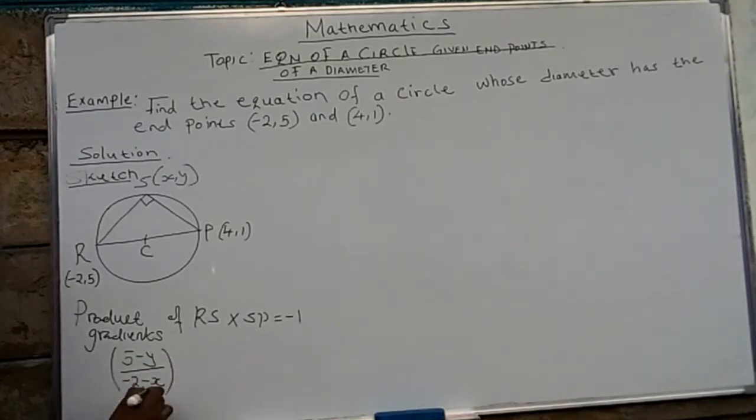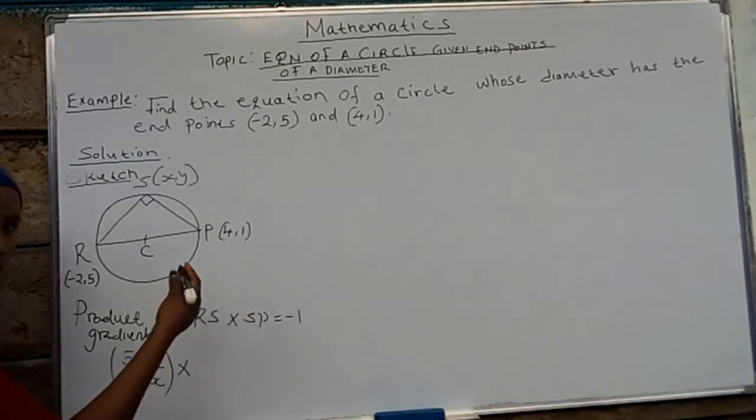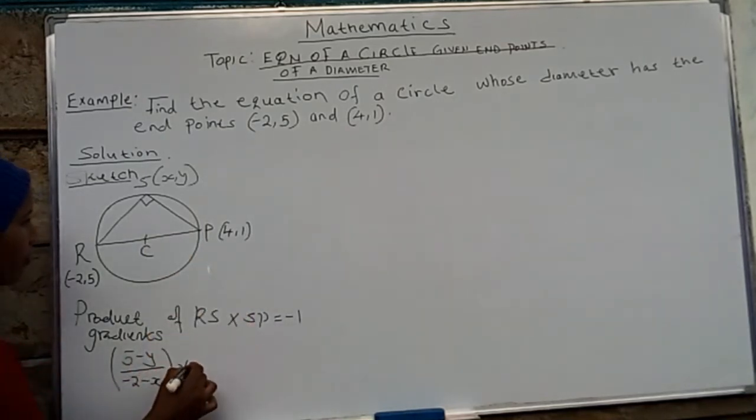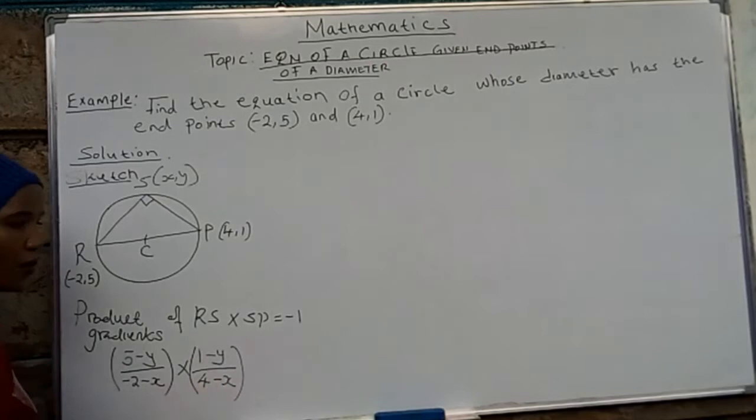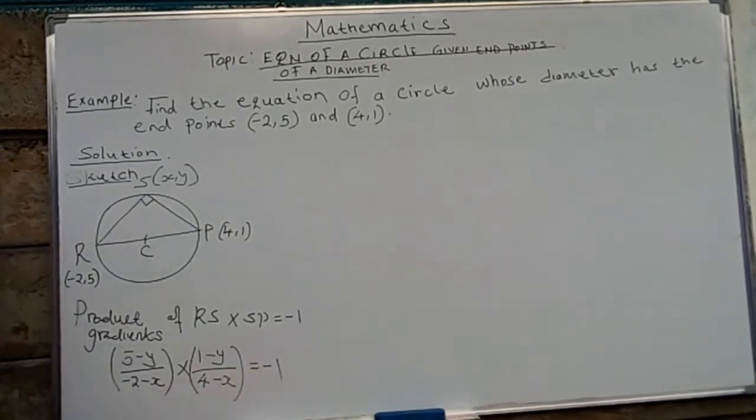Then this gradient I multiply by the gradient of SP. Change in y, change in x again. We shall have (1 - y) over (4 - x). And what are we expecting to get? We are expecting to get a negative 1, because the product of gradients of perpendicular lines is -1. As simple as that.